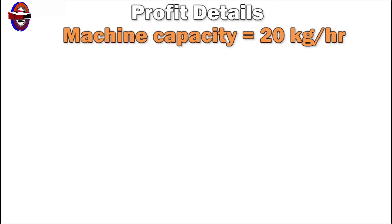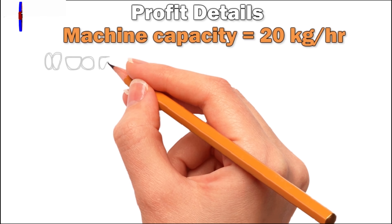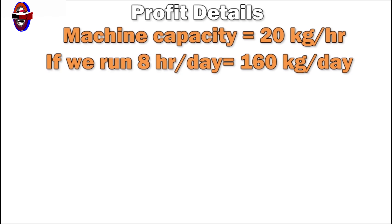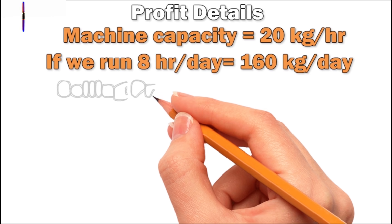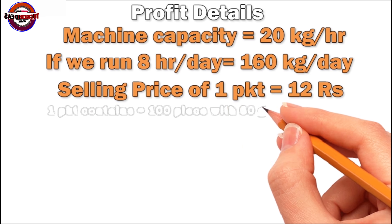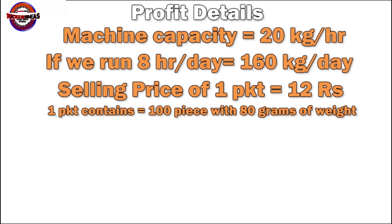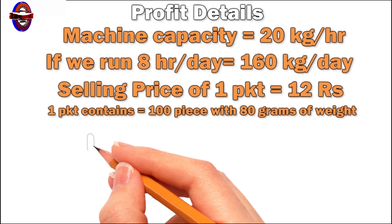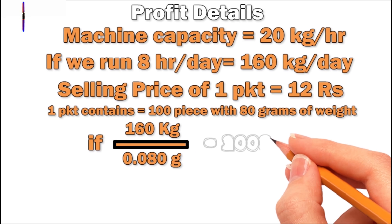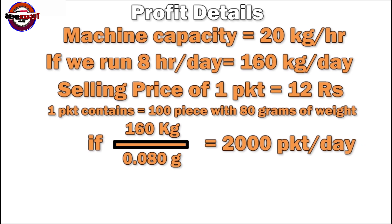This machine produces 20 kg. You can set it to produce a range of 2 kg. You can set it to house 10 kg. You can set it to produce a package at the selling price. There are 100 pieces in the market — 100 pieces in a packet. The weight is 80 grams. We have 80 to 100 grams. We can get 2,000 packs and 4,000 production.